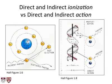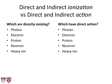For something to be ionizing, it has to have a charge. Photons would be indirectly ionizing. Electrons and protons are directly ionizing because they have charge. Neutrons are indirectly ionizing — no charge. Heavy ions, which are charged, would be directly ionizing, though you can also have indirect ionization. All of these could also have direct action.